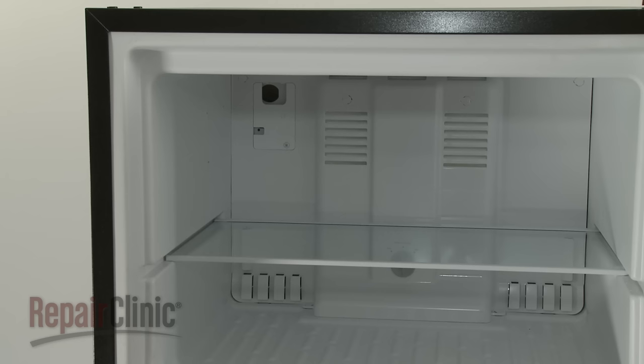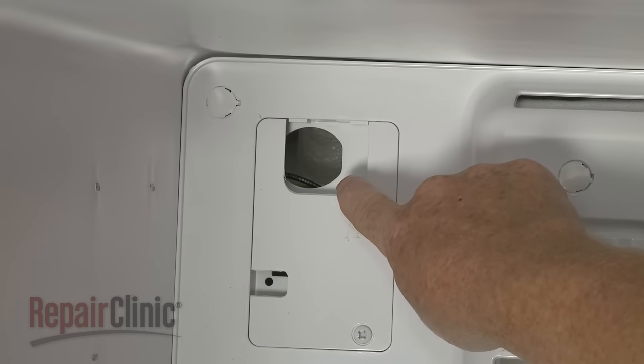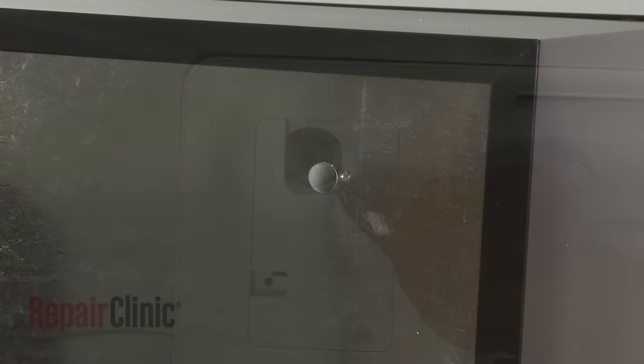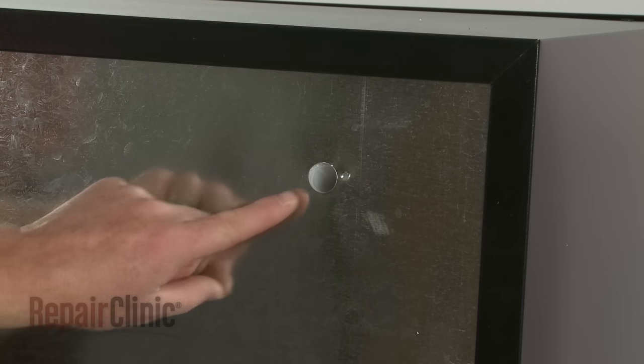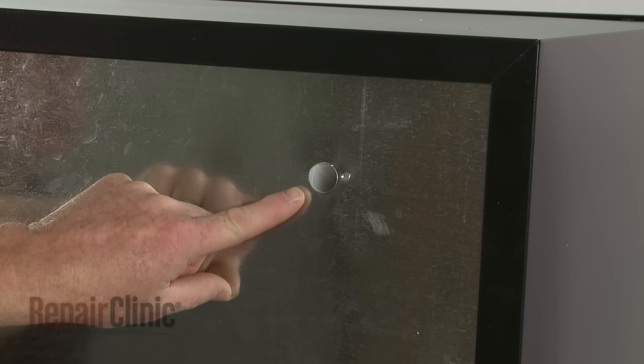If an ice maker has not been installed in the refrigerator before, you may need to remove a plug from the freezer compartment liner and a label and foam insert from the rear panel to expose the hole where the fill tube will be inserted.